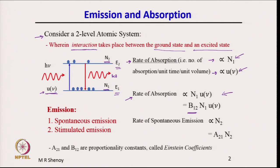The rate of absorption is B12 × N1 × U_nu. Emission comprises two components: spontaneous emission and stimulated emission. The fact that there are two types of emission was pointed out by Albert Einstein. The rate of spontaneous emission is proportional to N2, the number of atoms in the excited state, and we write the rate of spontaneous emission as A21 × N2, where A21 is the proportionality constant.